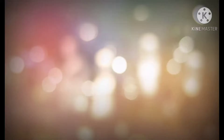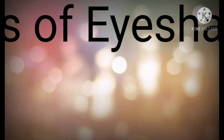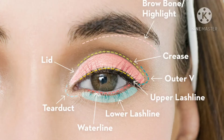Now let's get into the video. First, let me tell you the parts of the eyes where you apply eyeshadow. There are about 4 parts. Now let me tell you their names.